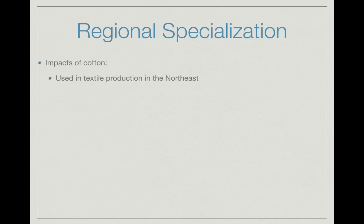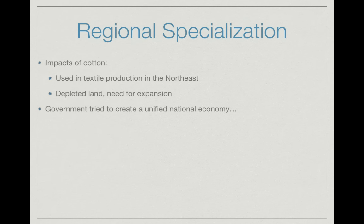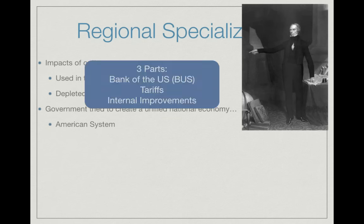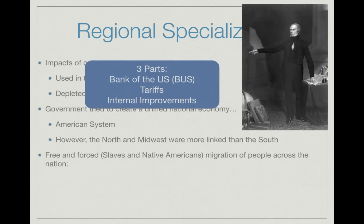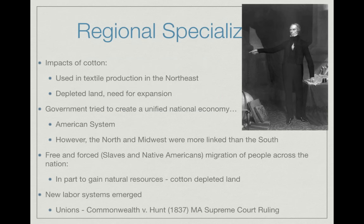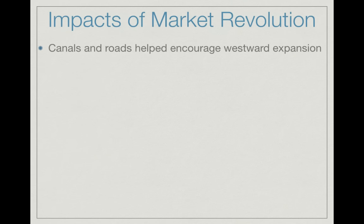Regional specialization: cotton was used in textile production in the Northeast but depleted the land, creating a need for expansion and contributing to tensions between North and South. The government tried to create a unified national economy, most notably through Henry Clay's American System — three parts: the Bank of the United States, tariffs (taxes on foreign goods), and internal improvements like canals and infrastructure. The tariffs would pay for the internal improvements. However, the North and Midwest were more closely linked through the American System than the South. New labor systems emerged, notably unions — legalized by the 1837 Massachusetts Supreme Court ruling in Commonwealth v. Hunt.